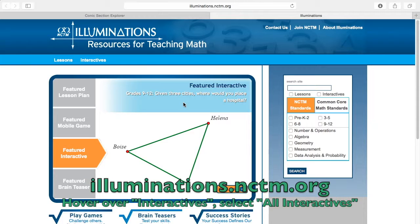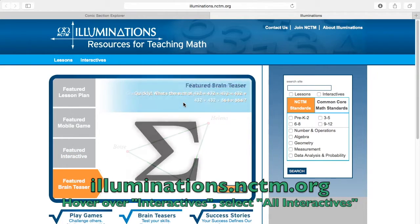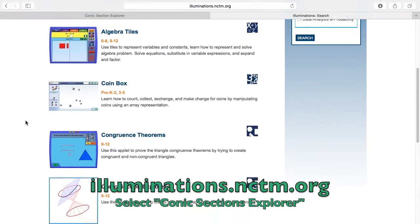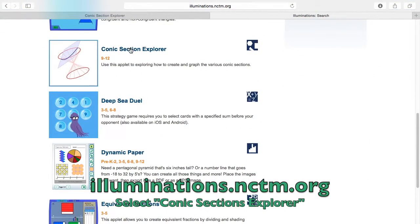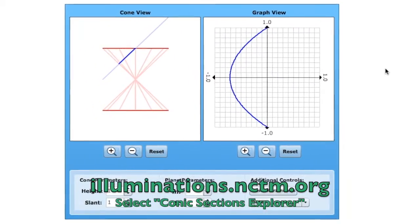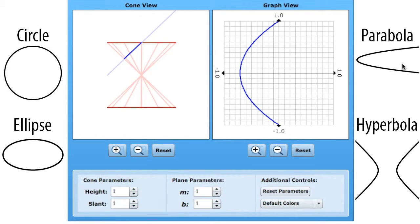You can find this virtual manipulative at illuminations.nctm.org. When you go to that site, click on Interactives, and then All Interactives. Scroll down, and you'll see Conic Section Explorer. I would like for you to click the link in the description or go to this website, so that way in a minute you can pause the video and play around with the virtual manipulative on your own.